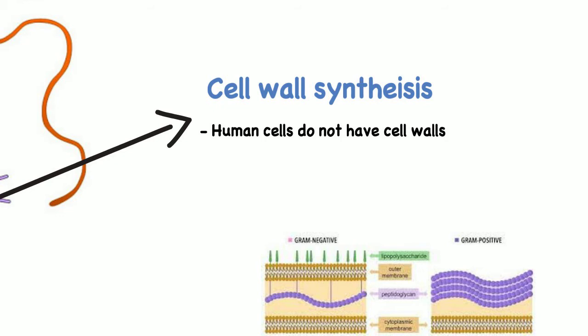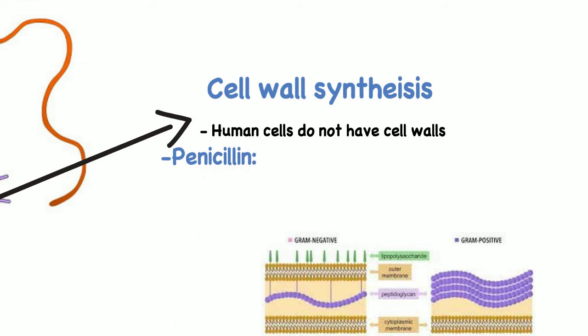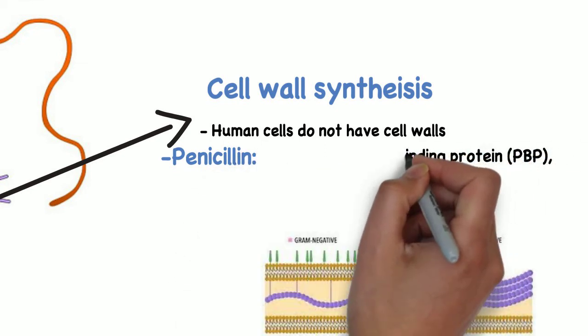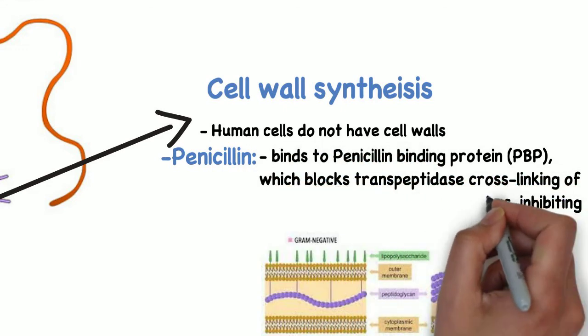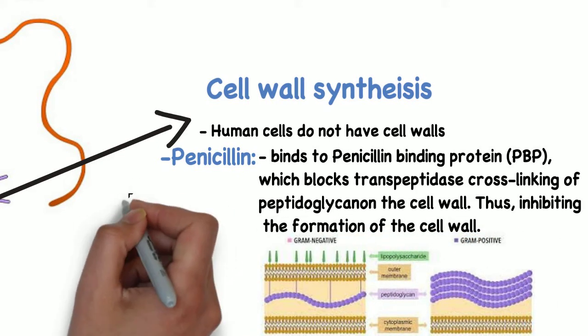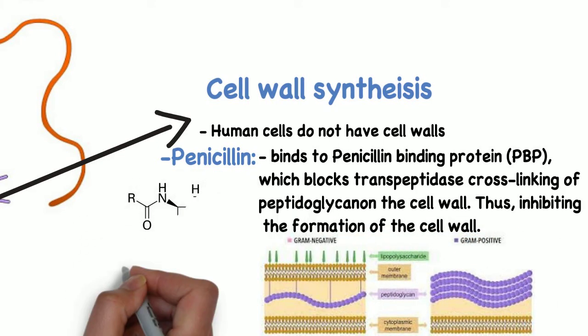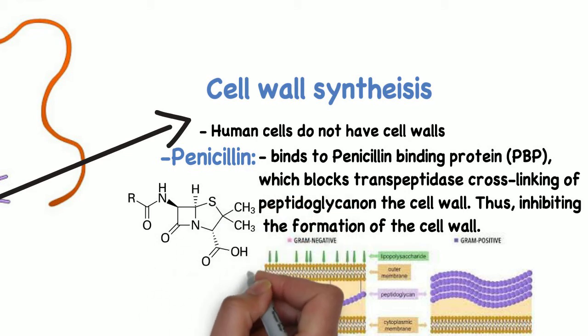An important antibiotic that works by inhibiting cell wall synthesis is penicillin, which is a beta-lactam antibiotic. These antibiotics work by binding to the penicillin binding protein, which blocks transpeptidase, a cross-linking of peptidoglycan on the cell wall. Thus it inhibits the formation of a cell wall.